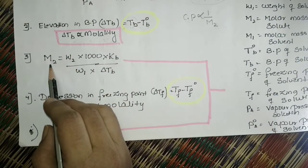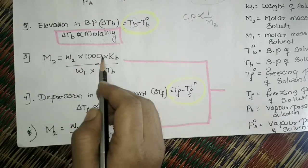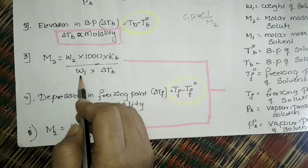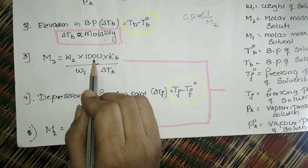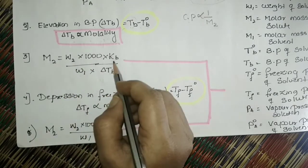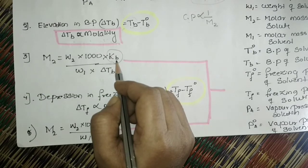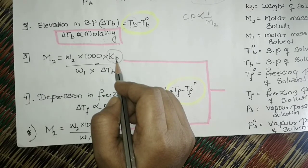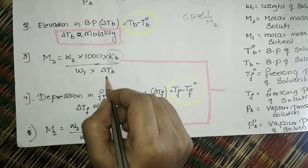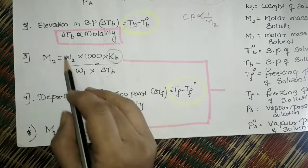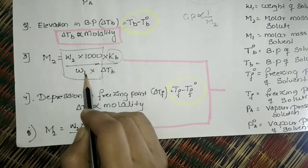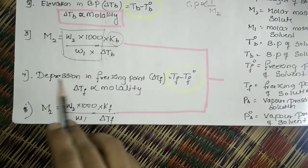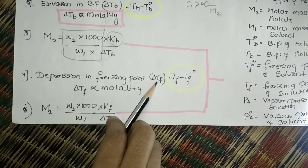The formula for molar mass using elevation in boiling point is: M2 equals W2 × 1000 × Kb divided by W1 × delta Tb. Here Kb is the ebullioscopic constant or boiling point elevation constant, and delta Tb is the elevation in boiling point. Keep these three terms in mind.